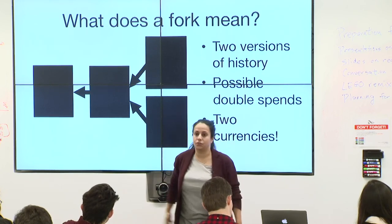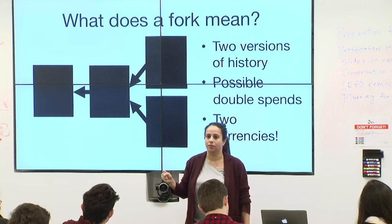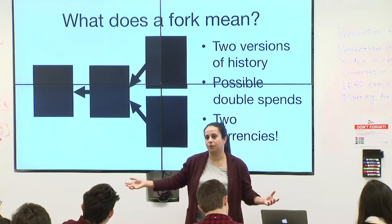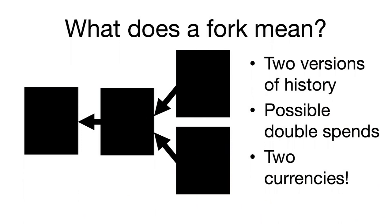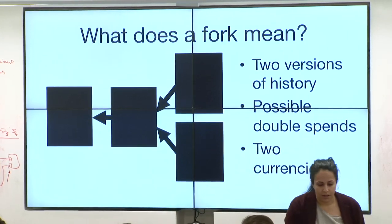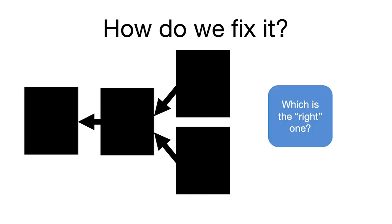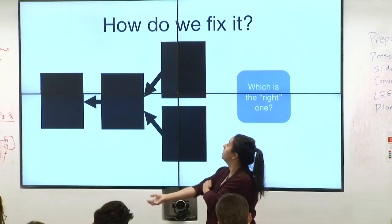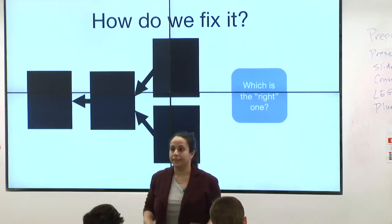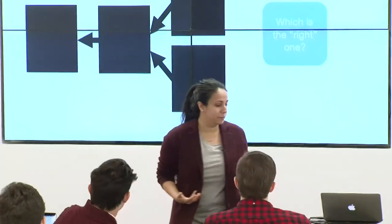This is kind of as though I took the money in my pocket, my dollar bill, and I Xeroxed them all and managed to convince some people that the Xerox was also real. This is the exact same thing as what's happening when you have these two things persist. So how do we fix it? Which is the right one? Given what I've shown you, it is not clear which is the right one, and this happens all the time in the Bitcoin network because it's probabilistic.